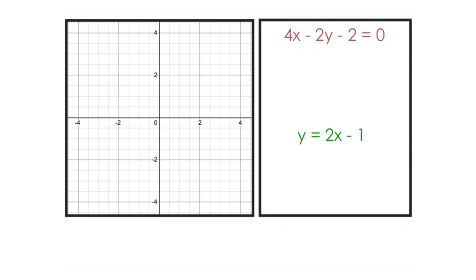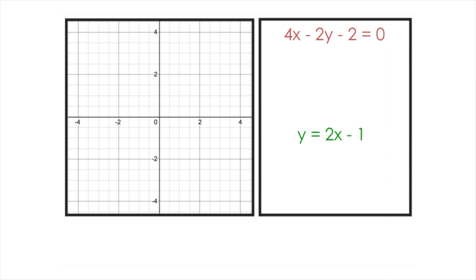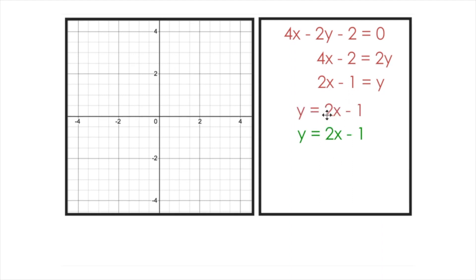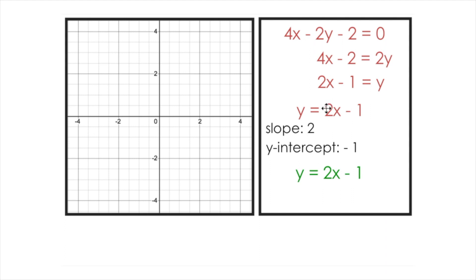The final example starts with something a little different. The first line is not written in slope-intercept form — it's written in standard form — while the second line is in slope-intercept form. To compare slopes and y-intercepts, we need to do a little algebra to rearrange the first equation. Solving for y — moving the negative 2y to the other side — gives us 4x minus 2 equals 2y. Dividing both sides by 2 produces y equals 2x minus 1. So the first line has a slope of 2 and a y-intercept of negative 1, and the second equation also has a slope of 2 and a y-intercept of negative 1.